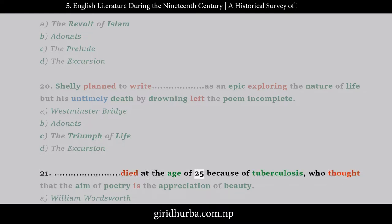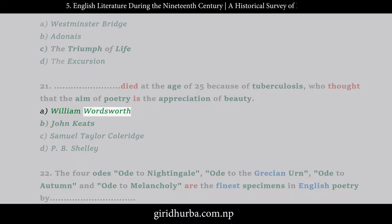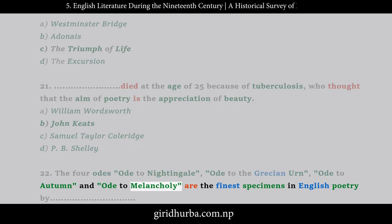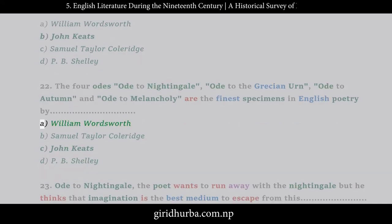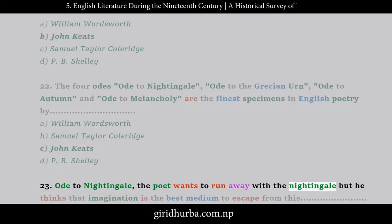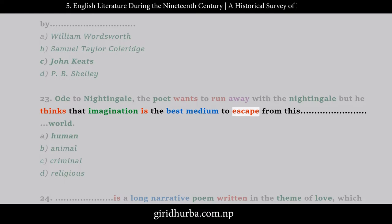Question 21: __ died at the age of 25 because of tuberculosis, and thought that the aim of poetry is the appreciation of beauty. A. William Wordsworth, B. John Keats, C. Samuel Taylor Coleridge, D. P.B. Shelley. Question 22: The four odes — Ode to Nightingale, Ode to the Grecian Urn, Ode to Autumn, and Ode to Melancholy — are the finest specimens in English poetry by: A. William Wordsworth, B. Samuel Taylor Coleridge, C. John Keats, D. P.B. Shelley. Question 23: In Ode to Nightingale, the poet wants to run away with the nightingale but thinks that imagination is the best medium to escape from this world. A. human, B. animal, C. criminal, D. religious.